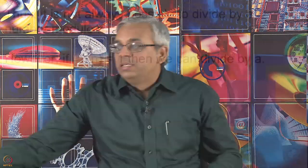I will first go to the restriction of the set by which we can divide. Here is one small condition: whenever a is relatively prime to n, whenever a is coprime to n, whenever the GCD of a and n is 1, then we can divide by a.